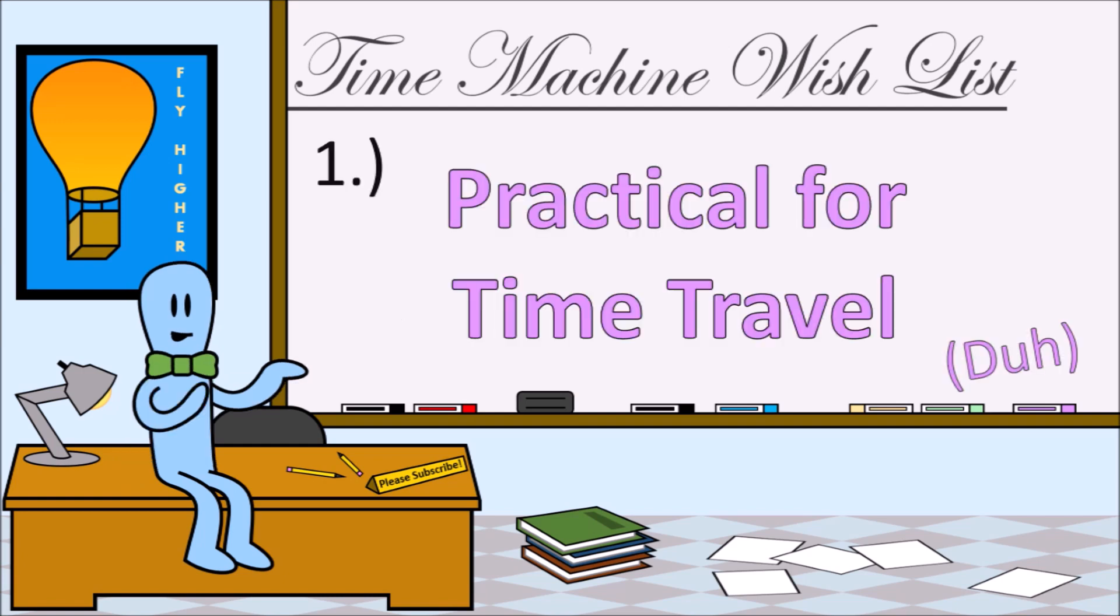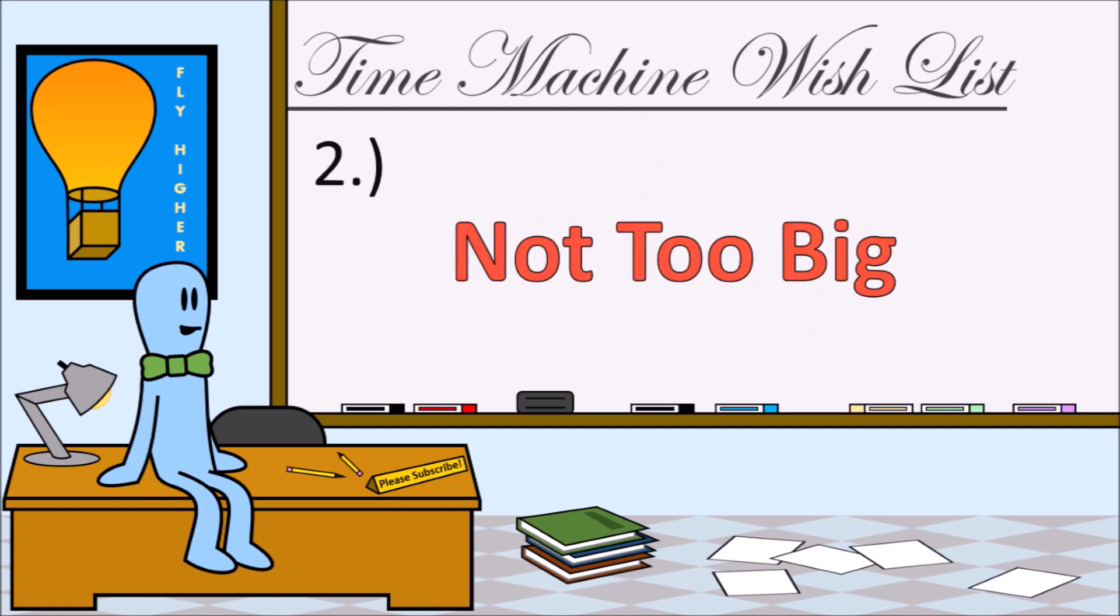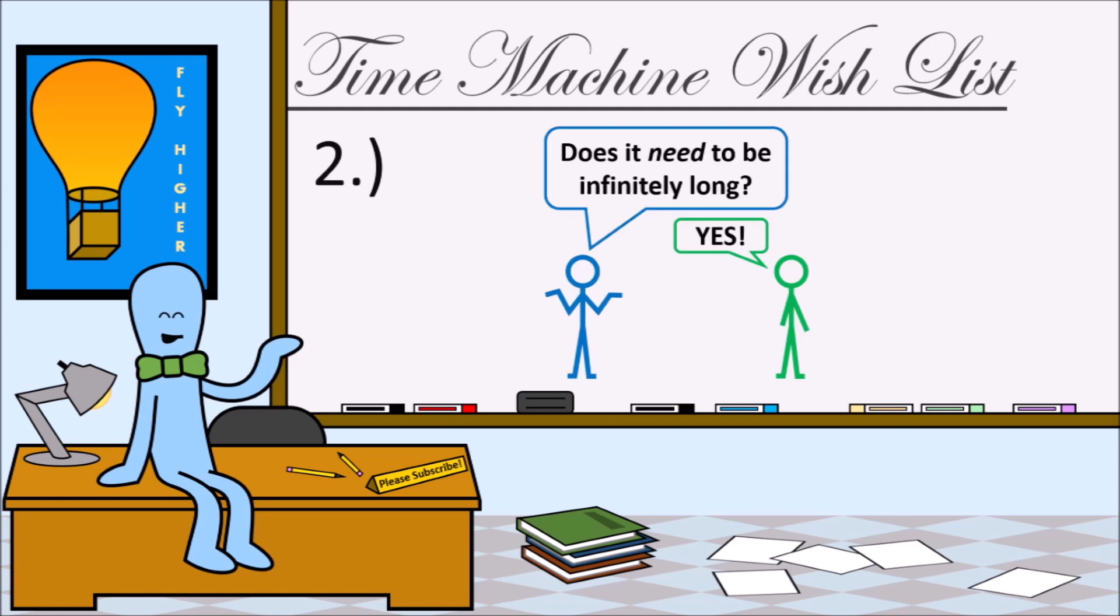In this case, I want to build a time machine that's practical for traveling forwards in time, and by that I mean I want to be able to easily travel hundreds of years into the future. The time machine can't be too large, so I'll be excluding any time travel methods that involves building a device that's infinitely long, infinitely big, or anything else the physicist is using to overcompensate.